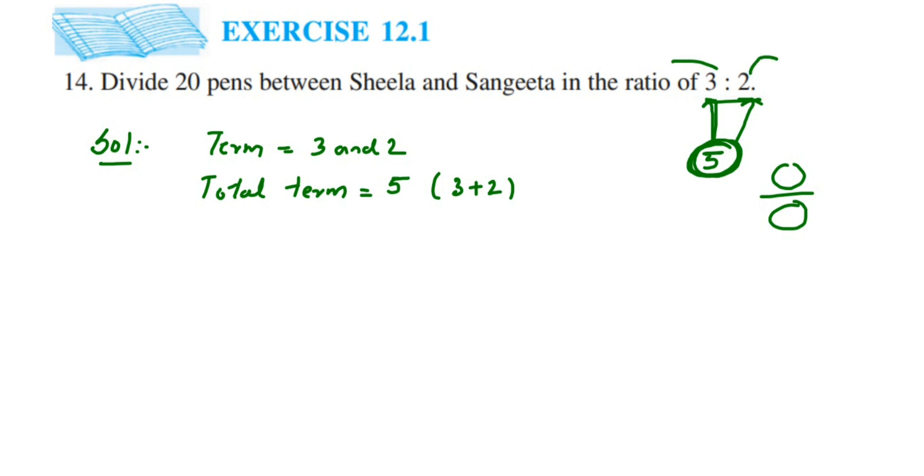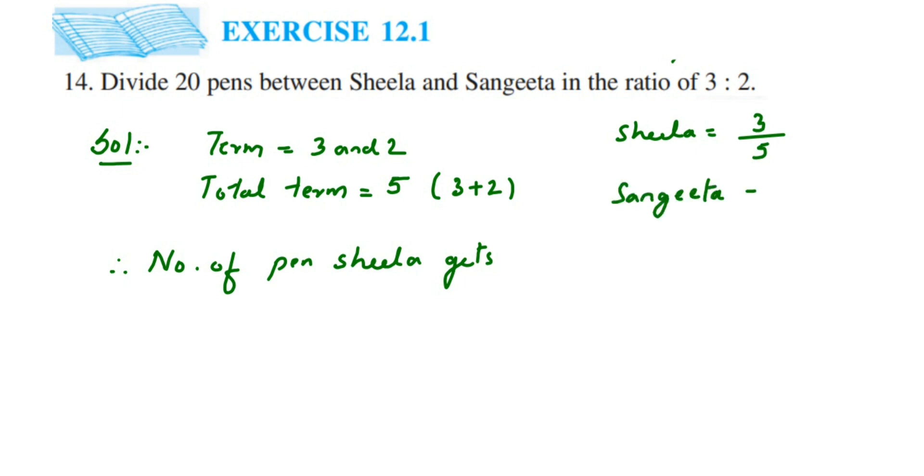I hope it's clear. So we got the fractions here. Therefore, number of pens Sheela gets—Sheela will get 3 out of 5, she is getting 3 parts of it, and Sangeeta out of 5 she gets 2 parts of it. So number of pens Sheela gets will be 3-fifths of total pens.